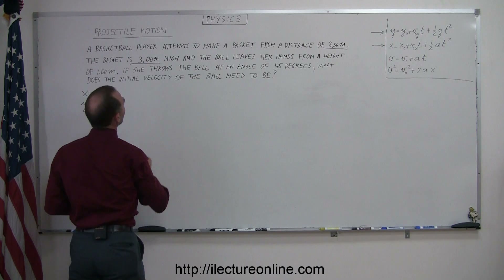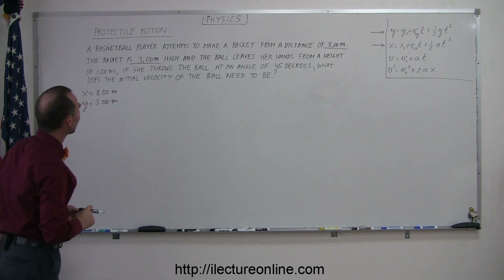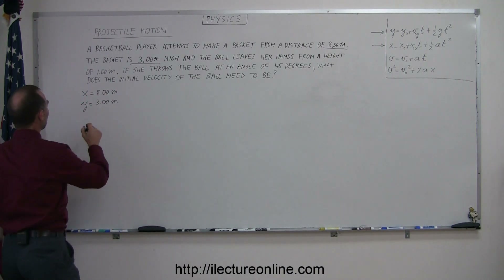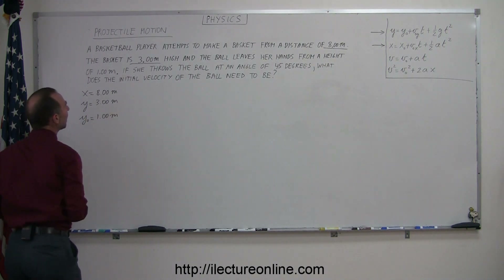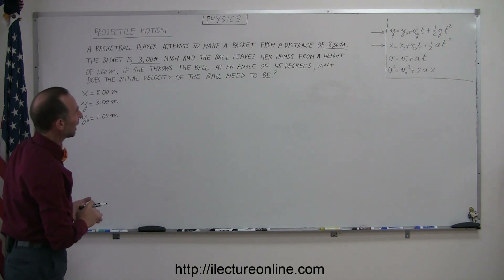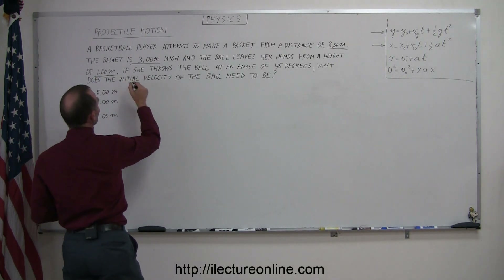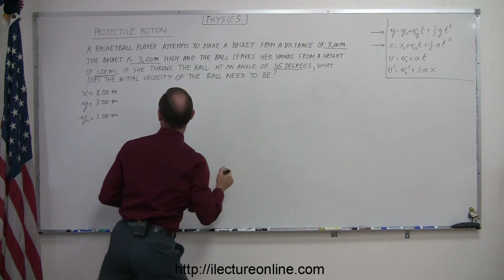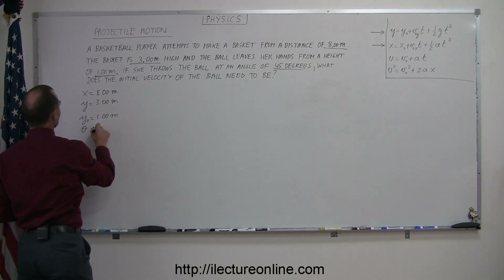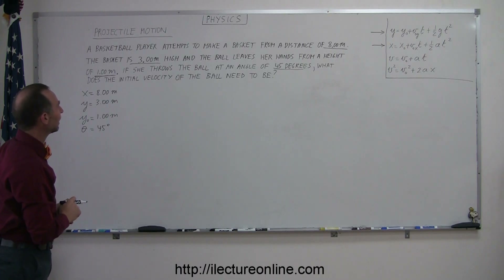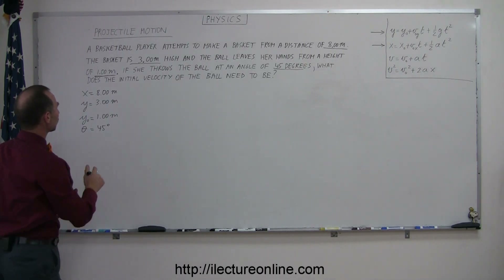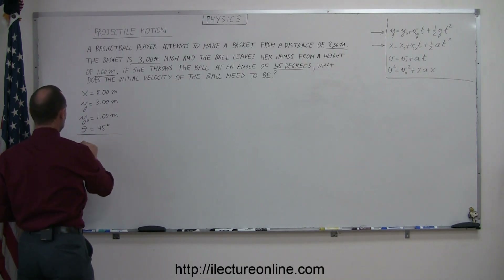The ball leaves her hands from a height of one meter, so that would be the initial height. The starting height would be 1.00 meters, and she throws the ball at an angle of 45 degrees. The angle theta is equal to 45 degrees. And finally, what should be the initial velocity to obtain the basket, so v initial equals question mark — that's what's being asked.